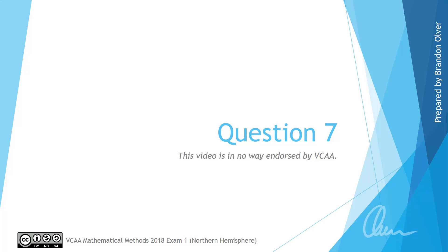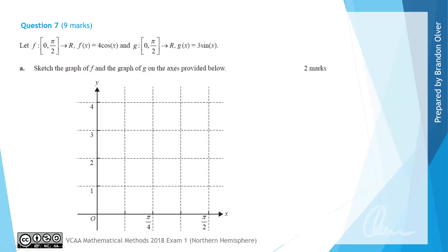Welcome to question 7 of the 2018 Mathematical Methods Exam 1 for the Northern Hemisphere. In this video we will be looking at the solutions for this question. A reminder that this video is in no way endorsed by VCAA. For question 7 we have: let f be the function with the rule f(x) = 4cos(x), and g be the function with domain [0, π/2] where the rule is 3sin(x). For part A we want to sketch the graph of f and the graph of g on the axes provided.